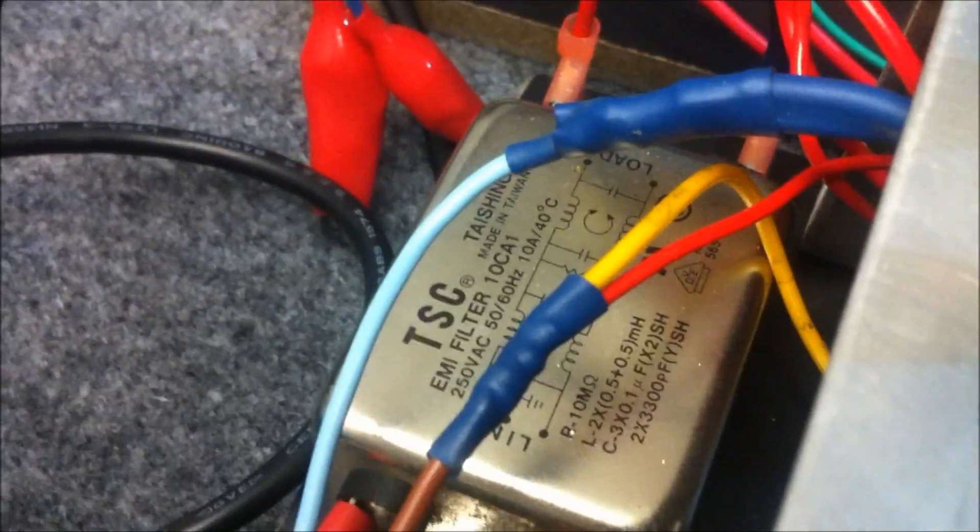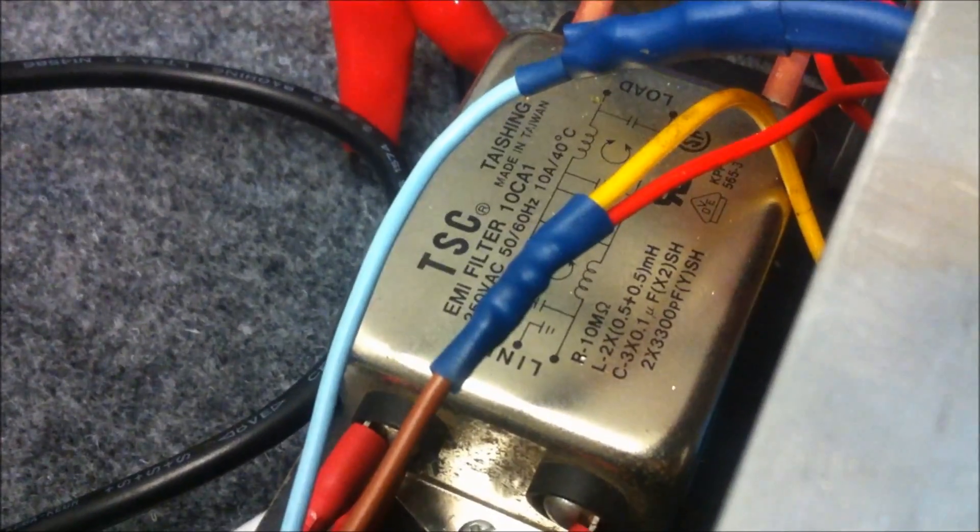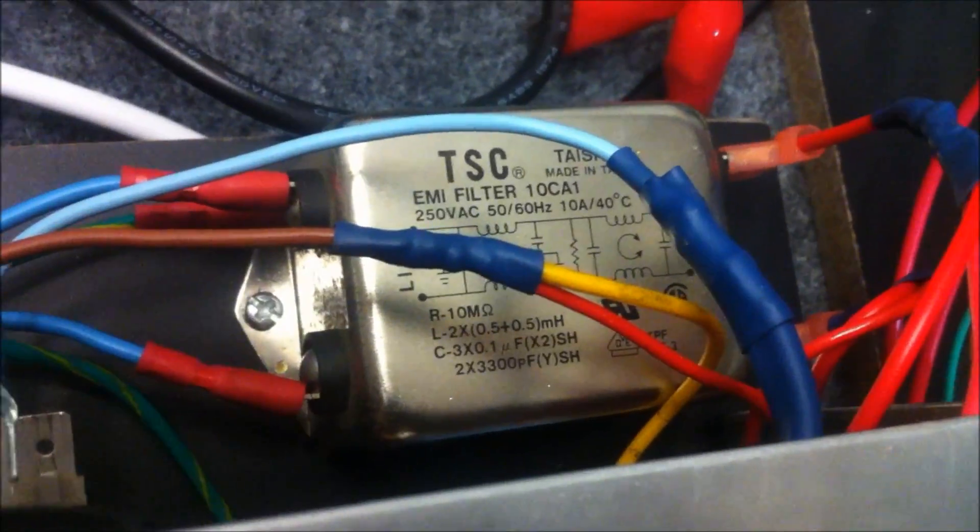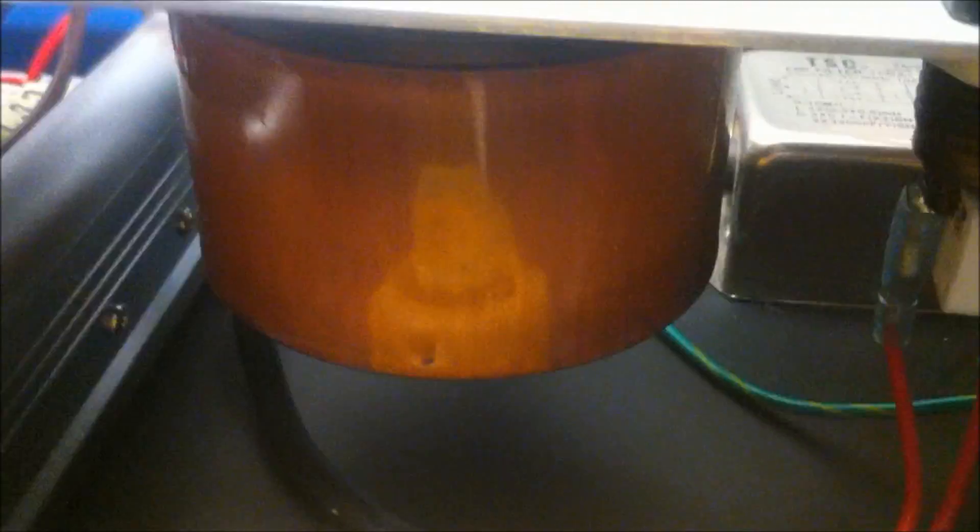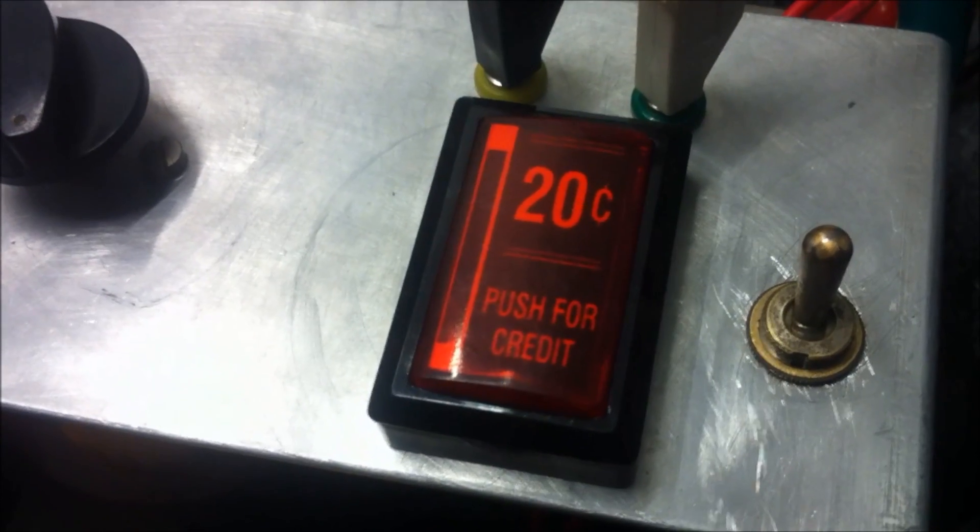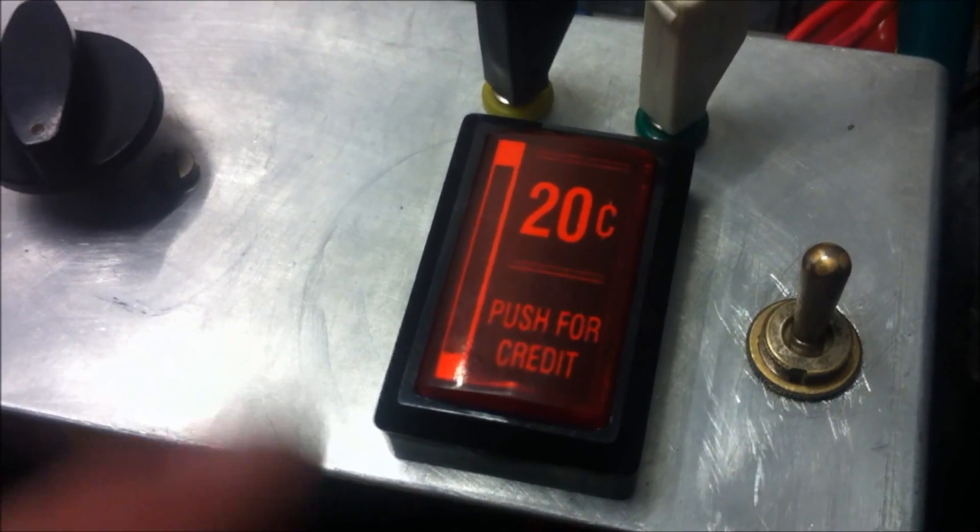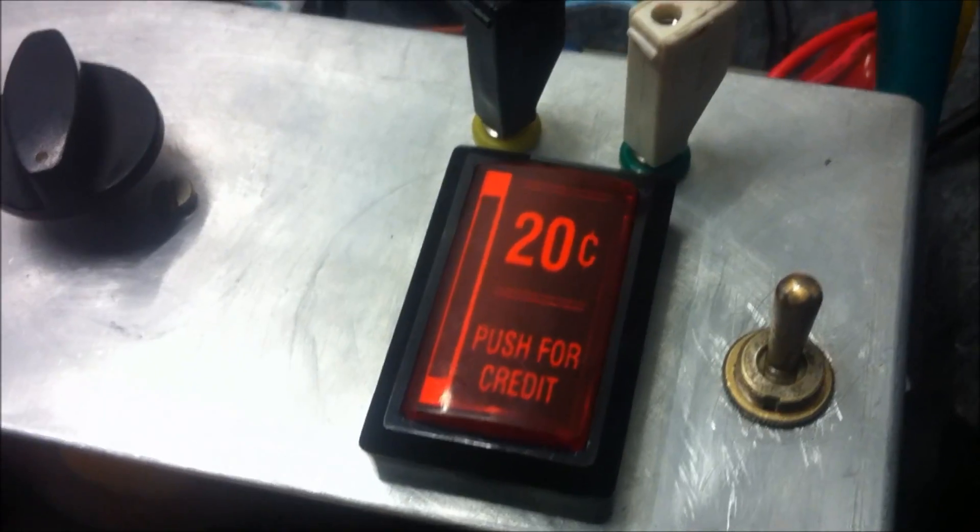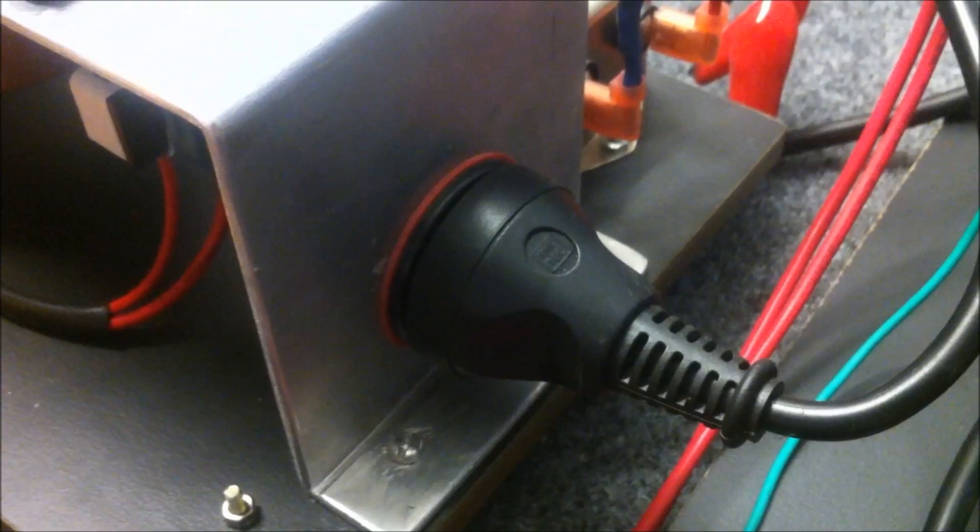As I said to you before, that feeds through to the EMI filter which you can see there and from there we go into our variac which gives us adjustability on the voltage and then out to the switches. We've got the on and off switch here and the novelty push for credit button which I got from an old pinball machine for our momentary pulsing. Outputs here and also the standard output plug there.